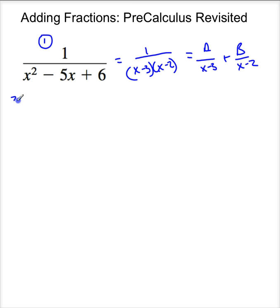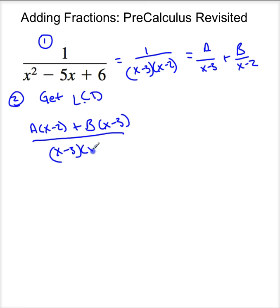Your next step is to get a common denominator. So I wind up with A times x minus 2 plus B times x minus 3 all divided by x minus 3 times x minus 2.